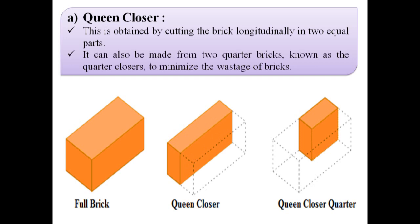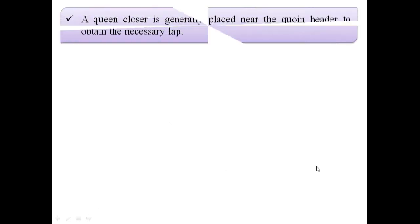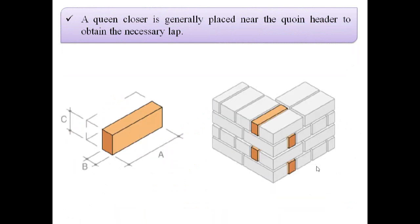A queen closure can also be made from two quarter bricks known as quarter closures to minimize the wastage of brick. So if we cut the queen closure again into two equal parts, we get a quarter closure as shown in the third image. A queen closure is generally placed near the quoin header to obtain the necessary lap. In this image, these are the quoin headers and the queen closures are placed near them.